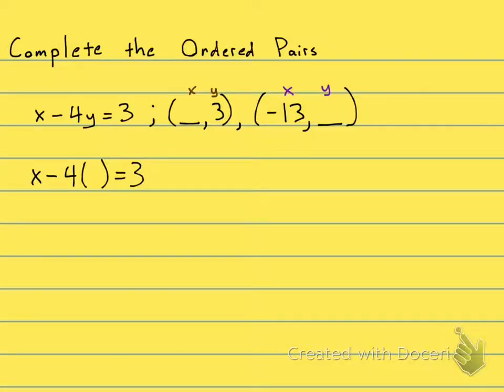Okay, and what am I going to put in for Y? I'll put in a 3 right there. So I have X minus 4 times 3 is 12 equals 3. And then one step to get the X by itself: to get rid of a minus 12...